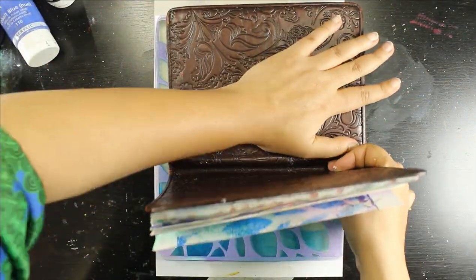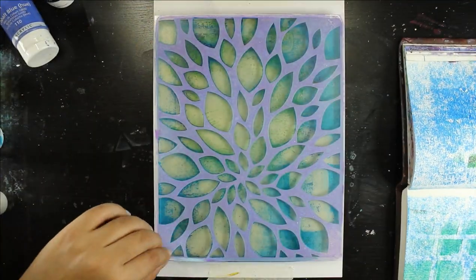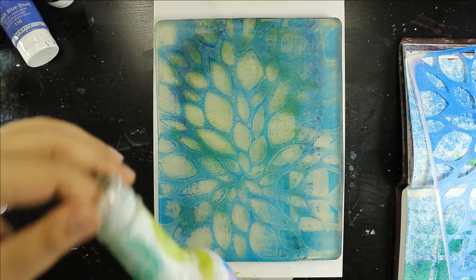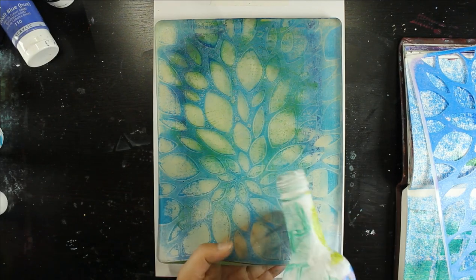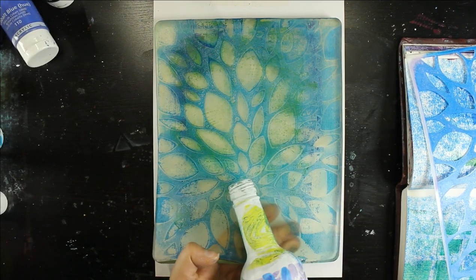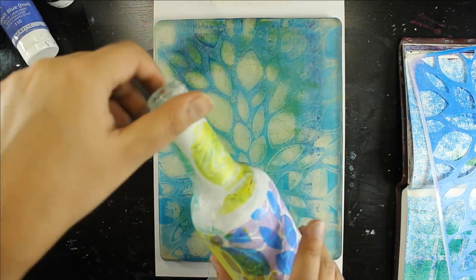And before I lift the stencil off, I am lifting off some of that excess paint through the stencil onto my art journal page. And I am going to finish off where I feel I need a little bit more color onto the neck of the bottle.